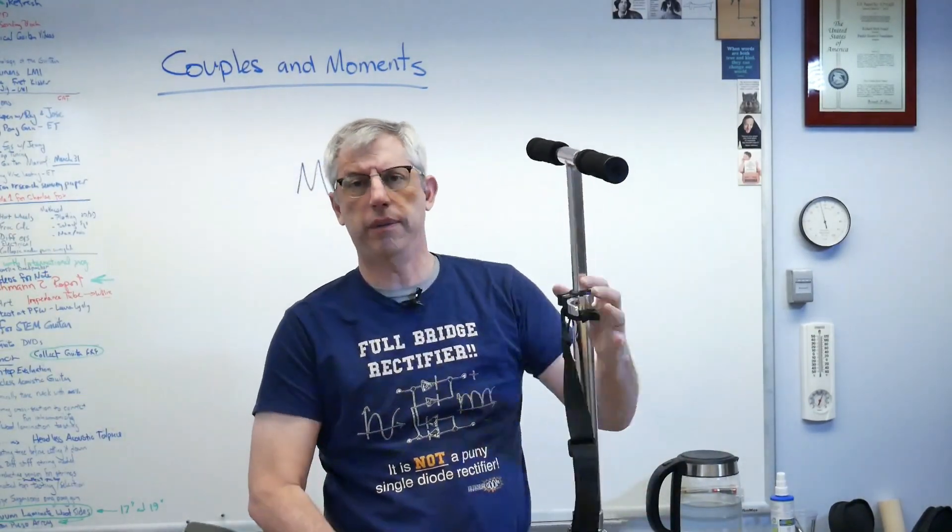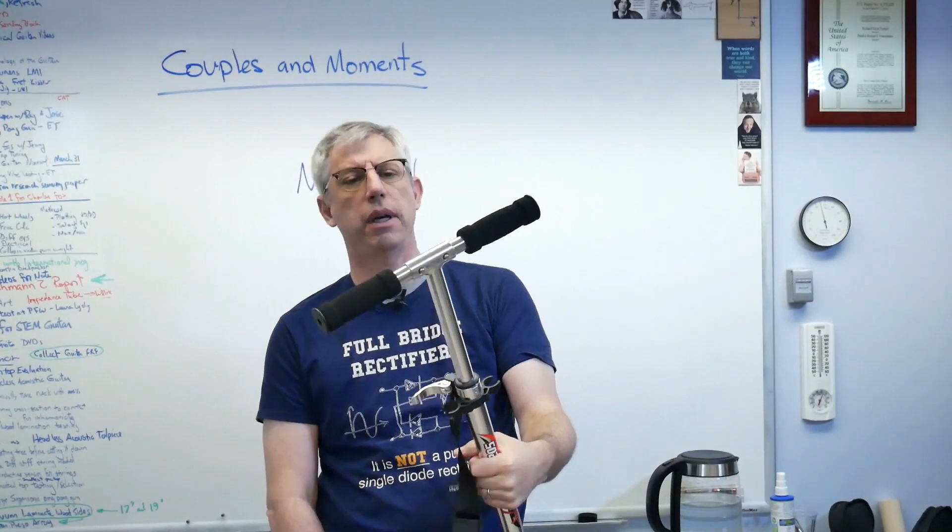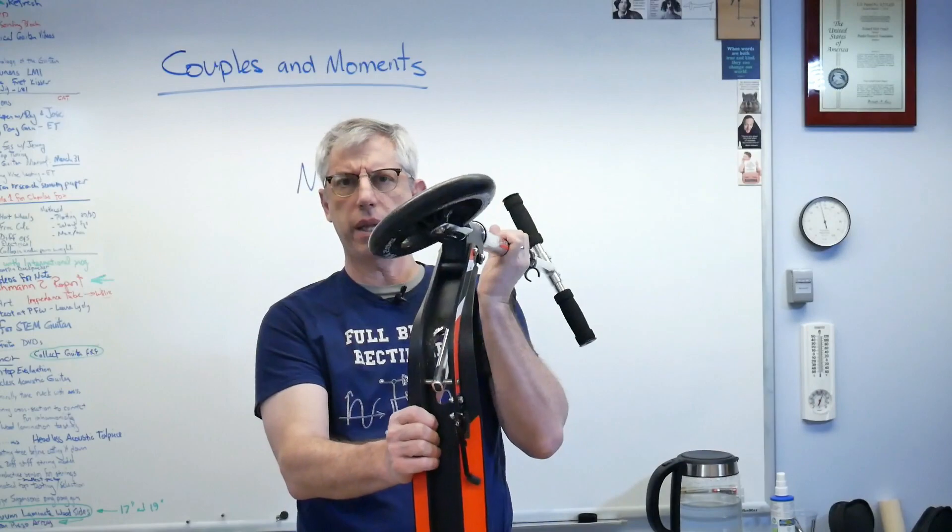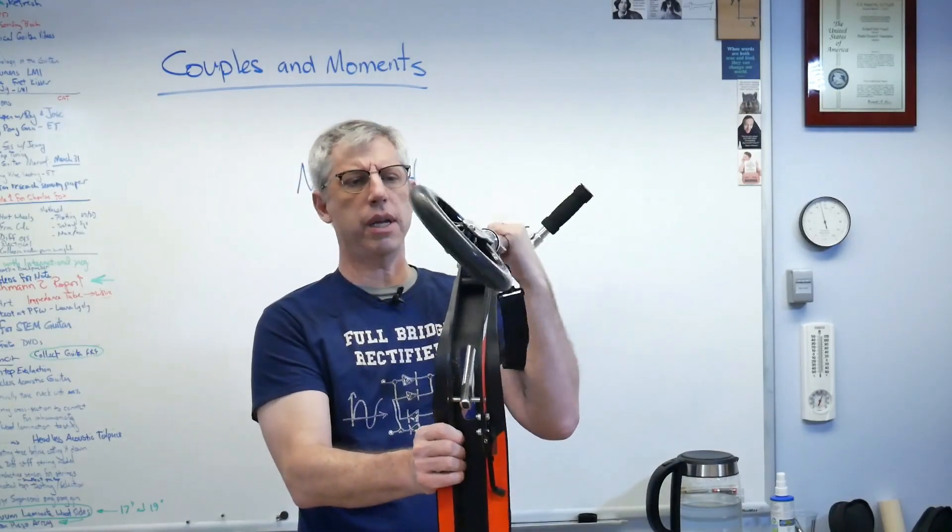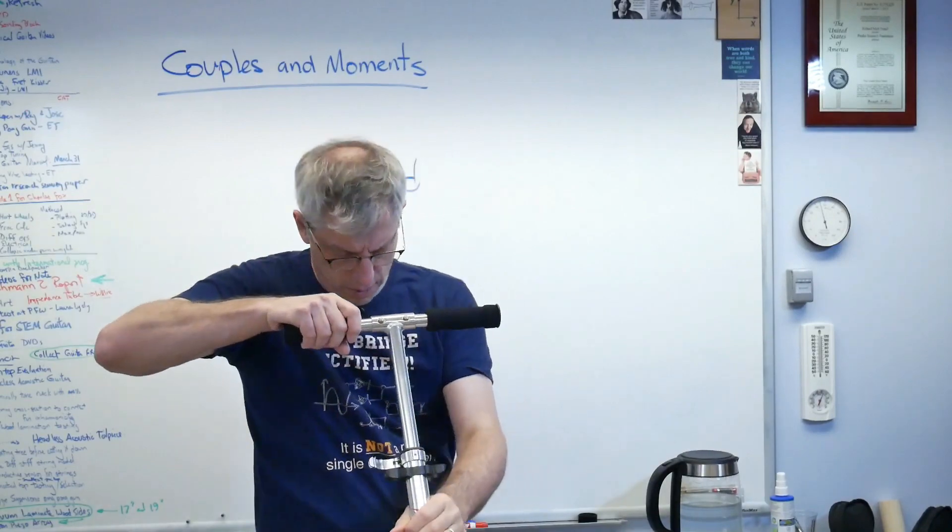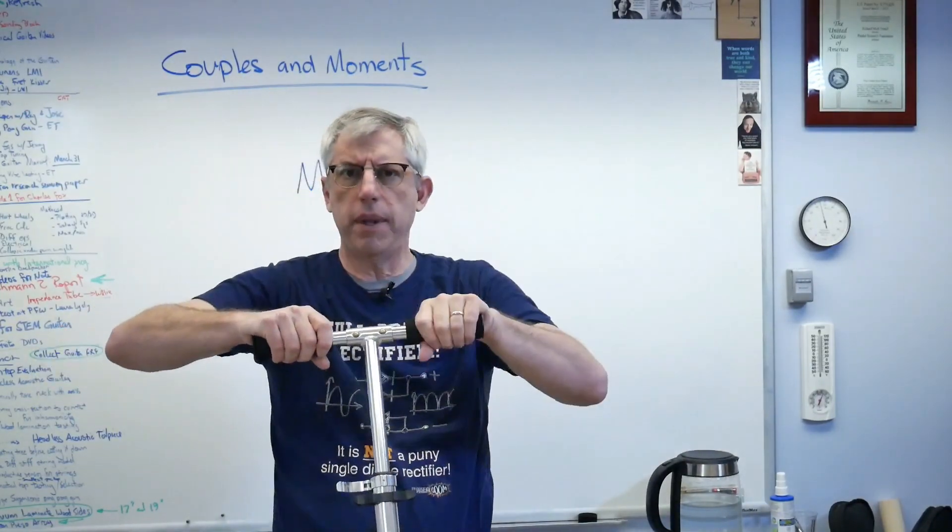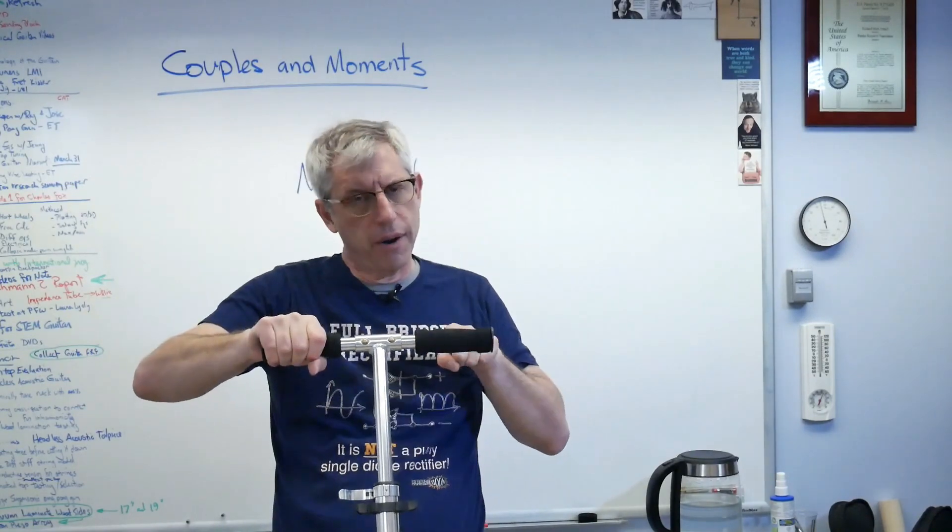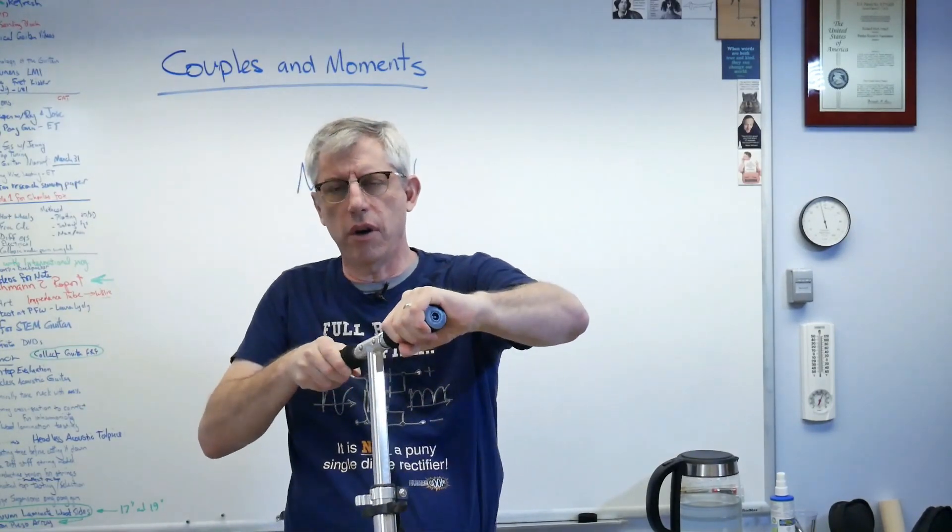Well, how about this? This is my scooter. That's the handlebars. If I want to steer this thing, I got to make that wheel turn. The easiest way to do this is to grab the handlebars, apply a force this way on this handlebar, and a force that way on that handlebar, and turn.